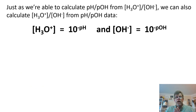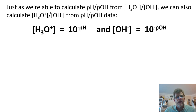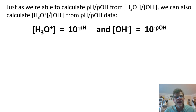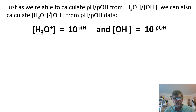Just as we were able to go in one direction — taking the negative log of hydronium or hydroxide ion concentration to come up with a pH or pOH — we can go back the other way as well. If we're given a pH or pOH, we can back-calculate to find the hydronium or hydroxide ion concentration. The hydronium ion concentration, if we know the pH, would be 10 to the negative of that pH. Similarly, to calculate the hydroxide ion concentration if we know the pOH, we set base 10 to the negative of that pOH.